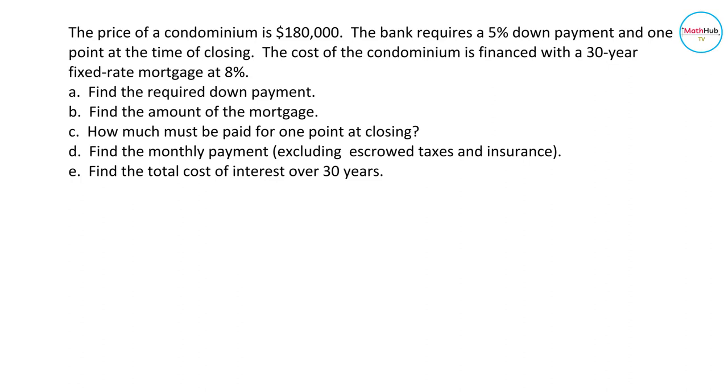The cost of the condominium is financed with a 30-year fixed-rate mortgage at 8%. Find the required down payment. Find the amount of mortgage. How much must be paid for one point at closing? Then find the monthly payment excluding escrow taxes and insurance and the total cost of interest over 30 years.